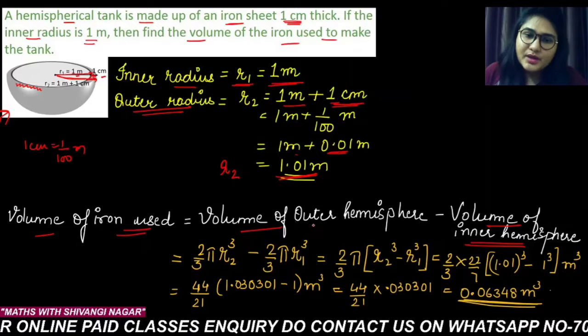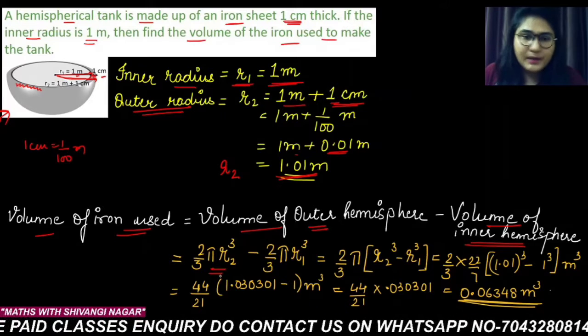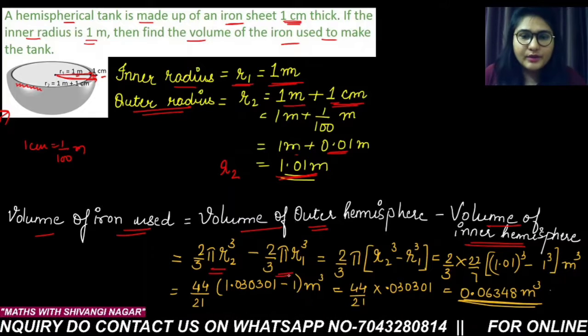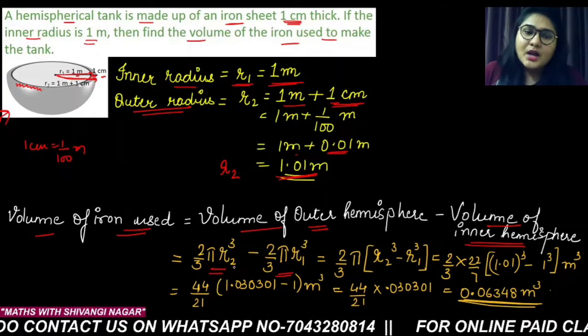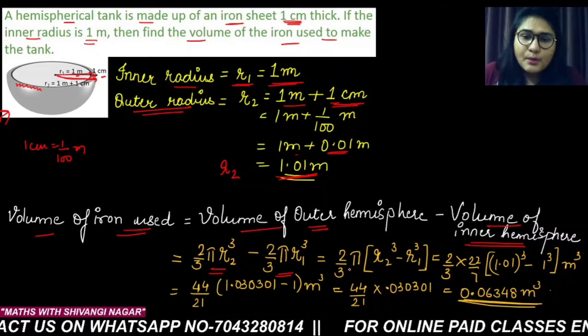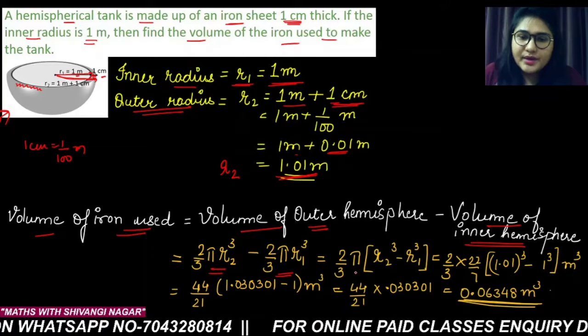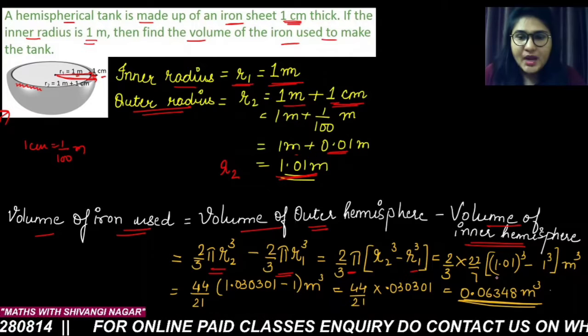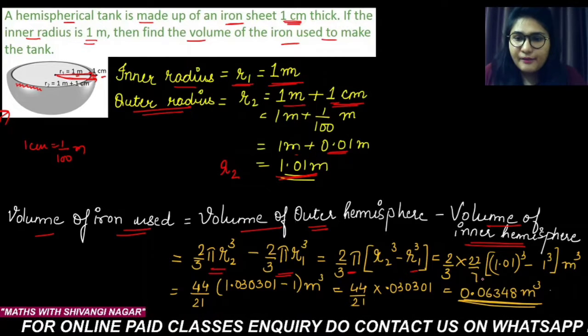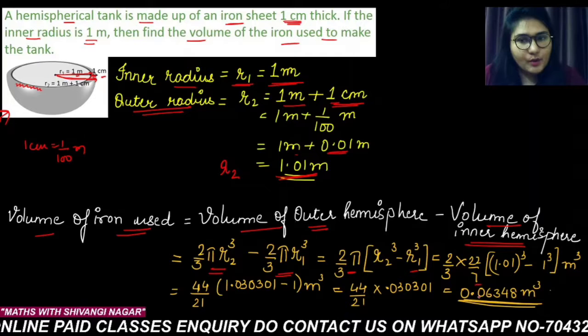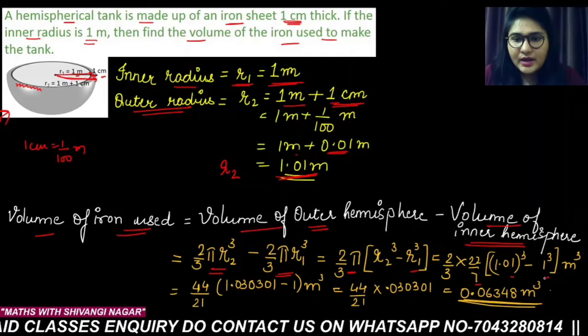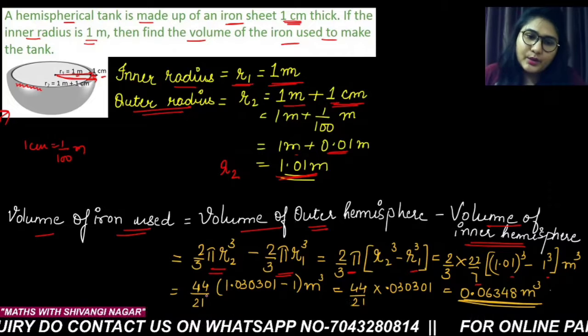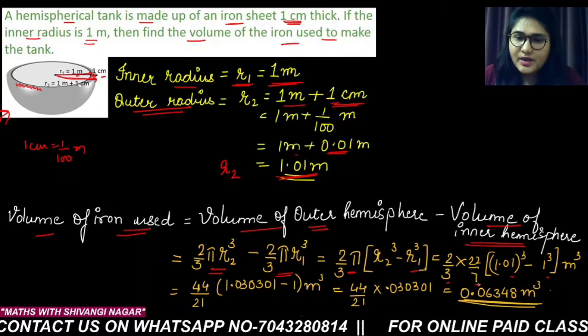So what is the volume of outer hemisphere? 2 by 3 π r2 cube. And volume of inner hemisphere is 2 by 3 π r1 cube. Now 2 upon 3 π is common in both the quantities, so I have taken common outside. So what we are left over with? r2 whole cube minus r1 whole cube. Then I have put the value of π over here as 22 upon 7, and the r2 and the r1 values we have put here. Now 2 into 22 is 44, and 3 into 7 is 21.